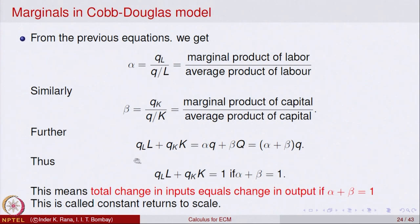If we want the left-hand side to equal Q, we need α + β = 1. This scenario in economics is called constant returns to scale — whatever the total input, it equals the total change in output. That is how marginals are used in economics for functions of several variables.